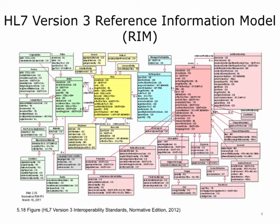For example, an encounter is an act, an order is an act, and a medication administration is an act. People or entities play roles that relate to the act — doctors order orders, patients are admitted to a hospital encounter, and nurses administer medications. Other entities include medications and the patient's location. Amazingly, HL7 was able to fit all of the information needed for healthcare interoperability on a single page.